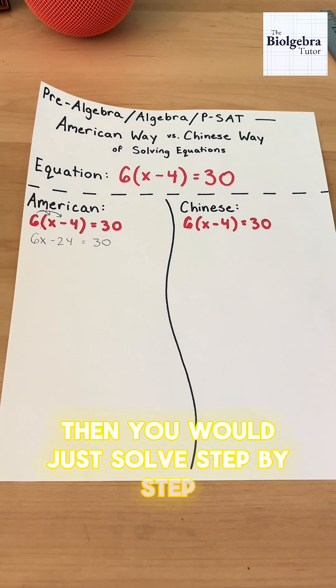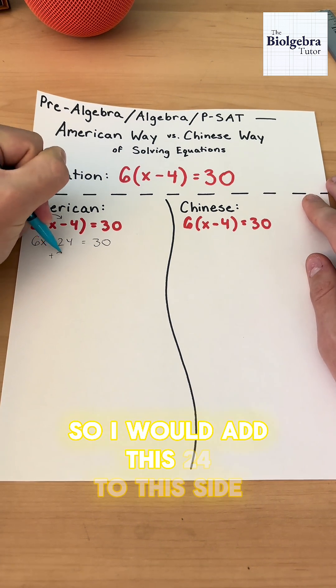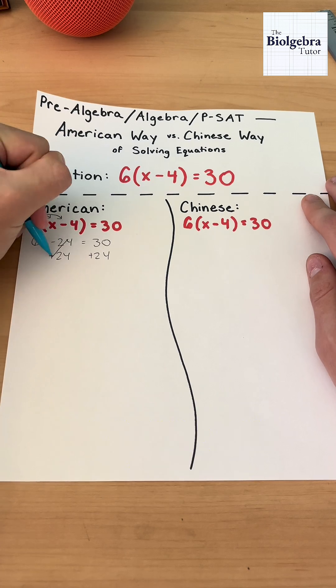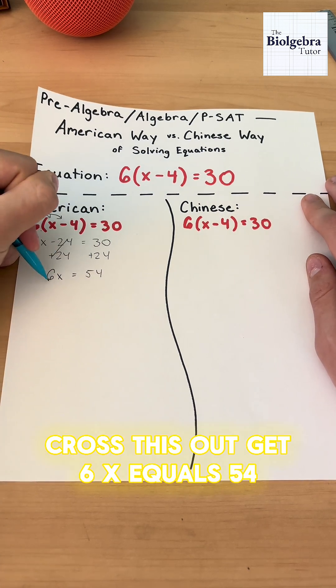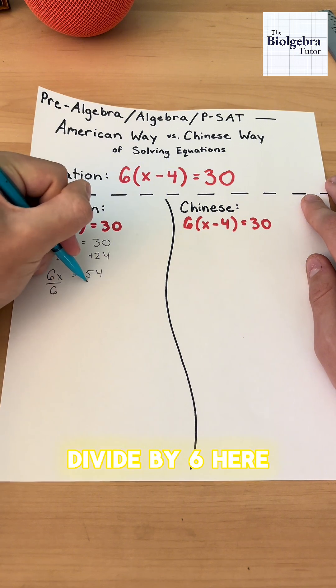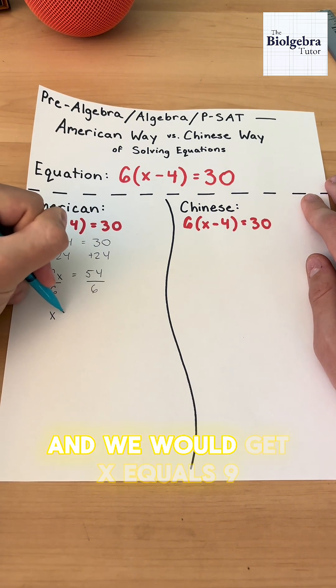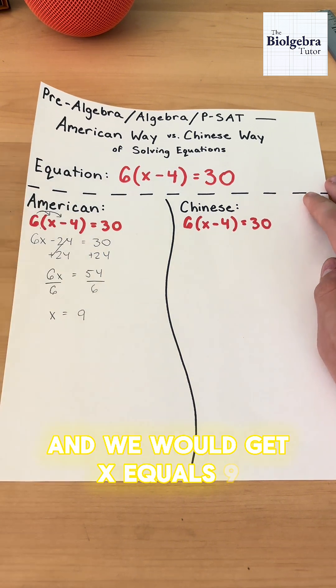Then you would just solve step by step. So I would add this 24 to this side, cross this out, get 6x equals 54, divide by 6 here, and we would get x equals 9.